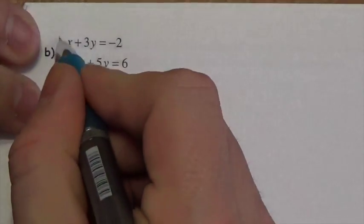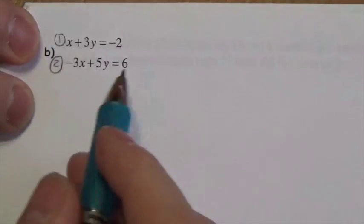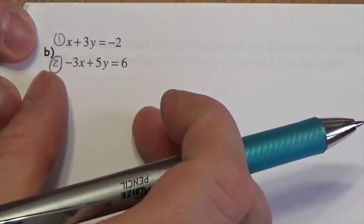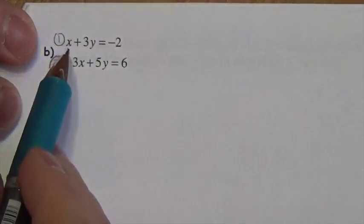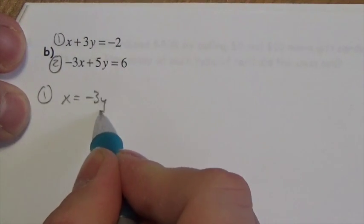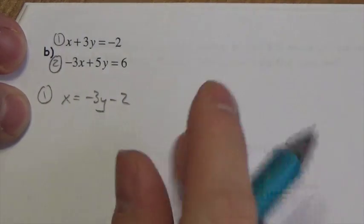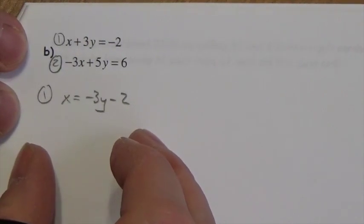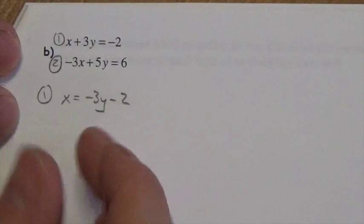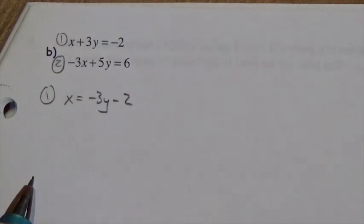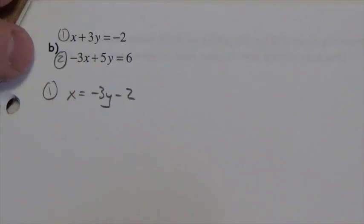Let's look at this next one. Here's equation one and here's equation two. Notice in this case the easiest variable to isolate is in equation one, and it's x this time. So equation one gives x equals negative 3y minus 2. That's not comfortable for a lot of people, but my best advice is get comfortable with it. Because if you try to isolate y in either equation, you're going to get fractions, and errors are more likely to pop up.